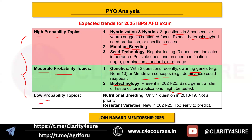For low probability topics in genetics and plant breeding there are two: nutritional breeding and resistant varieties. Only one question was asked in 2018 for nutritional breeding — not a priority. For resistant varieties, one new question appeared in 2024, but it's too early to predict recurrence without more data.